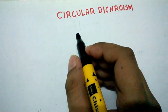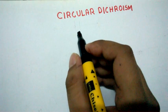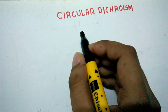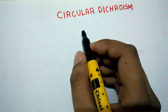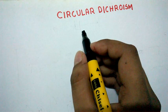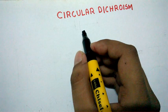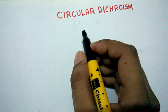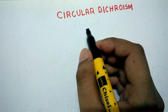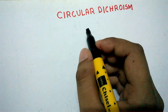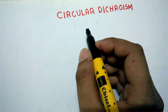In this video I'm going to talk about circular dichroism and circular dichroism spectroscopy. Circular dichroism spectroscopy is a very good technique to determine the structural information about a protein, especially the secondary structure of a protein, and it also gives us information about protein folding and lots of other information that we would see at the end of the video.